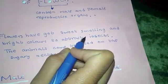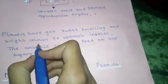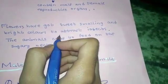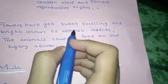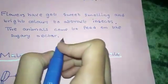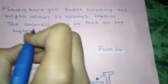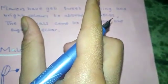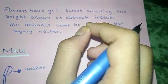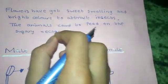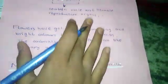Flowers have got sweet smelling and bright colors to attract insects. They're scented to attract insects and animals, which come to feed on the sugary nectar.